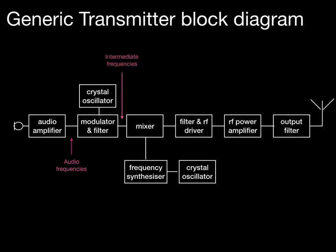After the modulator and filter we'll find some intermediate frequencies. At this stage the audio frequencies have been used to modulate the RF produced by the crystal oscillator, and some intermediate frequencies have been produced. These frequencies will depend on the modulation scheme selected. After the mixer, where frequencies from the crystal oscillator and frequency synthesizer pair are mixed in, we get up to our final frequency — the frequency we want to transmit, perhaps 14.035 MHz.